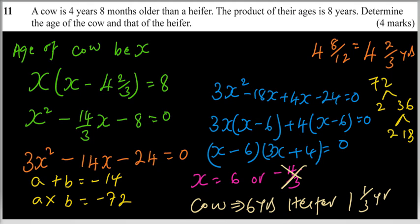That is how you work out that question. For the marks, you get one method mark for setting up. You get another method mark for forming the quadratic equation. Get another mark for solving the quadratic equation. And you get a bonus mark for being able to write the age of the cow and the age of the heifer.